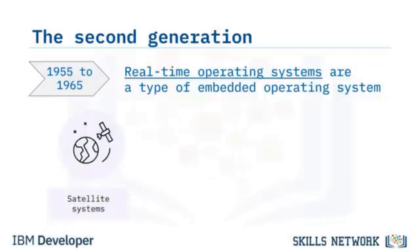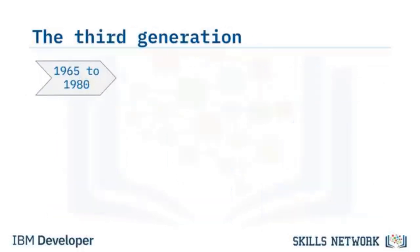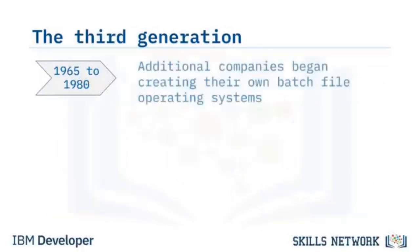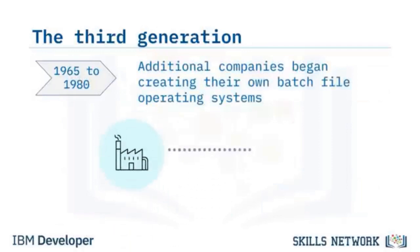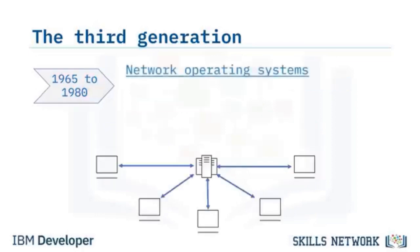Airplanes, air traffic control systems, and space exploration were among the first to use real-time operating systems. As time passed, satellite systems, robotics, and even cars implemented real-time operating systems. During the third generation of operating system development, additional companies began creating batch file operating systems for their large computing needs.